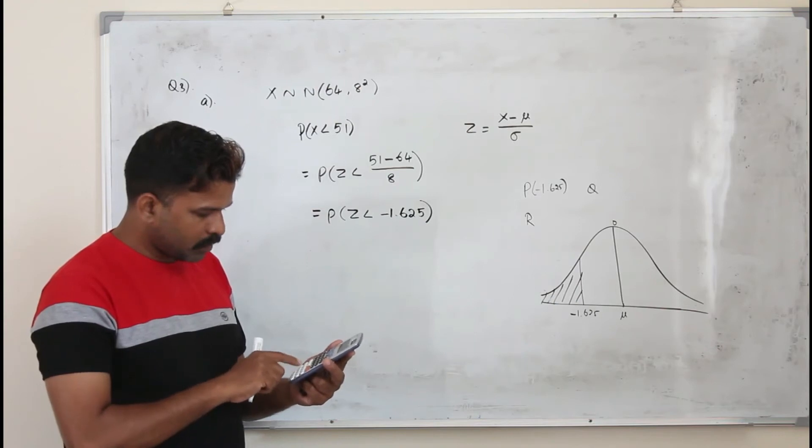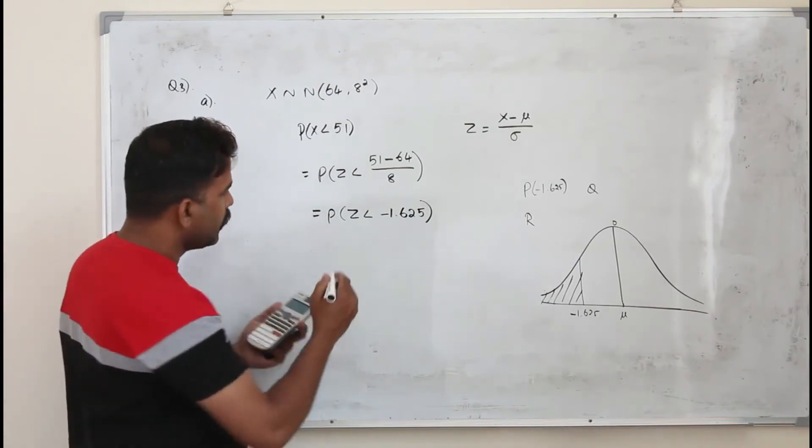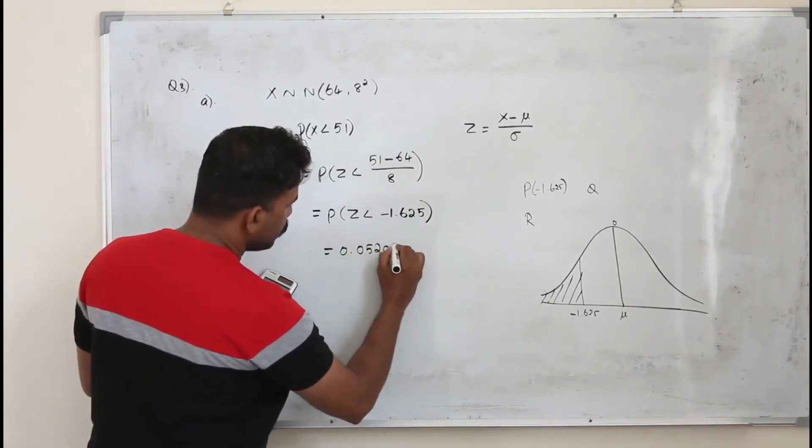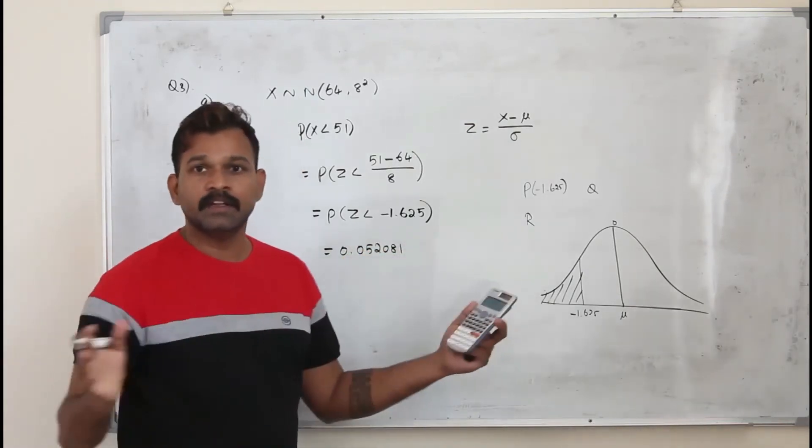Minus 1.625. I got 0.052081. That's the value. We got the solution already.